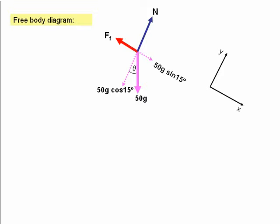Right, we're now ready to write down our equations of motion. We can write an equation of motion in the x direction first. The resultant force in the x direction, taking the positive direction as down the slope, is 50g sin 15 minus the frictional force F_f.